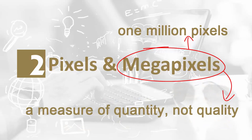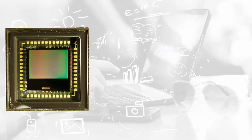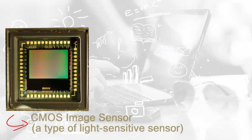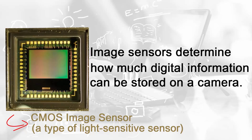Some older digital cameras with a lower megapixel rating are able to take higher quality photos than some newer digital cameras that advertise a significantly higher number of megapixels. Part of the reason for this is that all megapixels are not created equally, and there are other factors to consider. One of the most significant factors affecting image quality is the size of a digital camera's image sensor, which helps determine how much digital information can be stored on it. All digital cameras use a light-sensitive sensor to capture the light reflected off of a subject and convert that light into a digital photo.